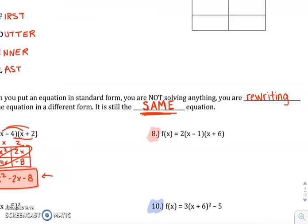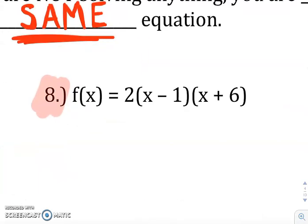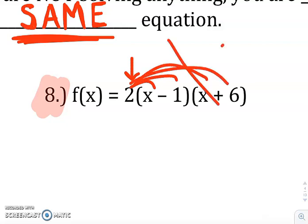So how about number 8? Two sets of parentheses, so we will do a generic rectangle, but we have to address this 2 first. So the biggest error I see people do is that they see this 2 and they want to distribute it into everything. That is not what you want to do.